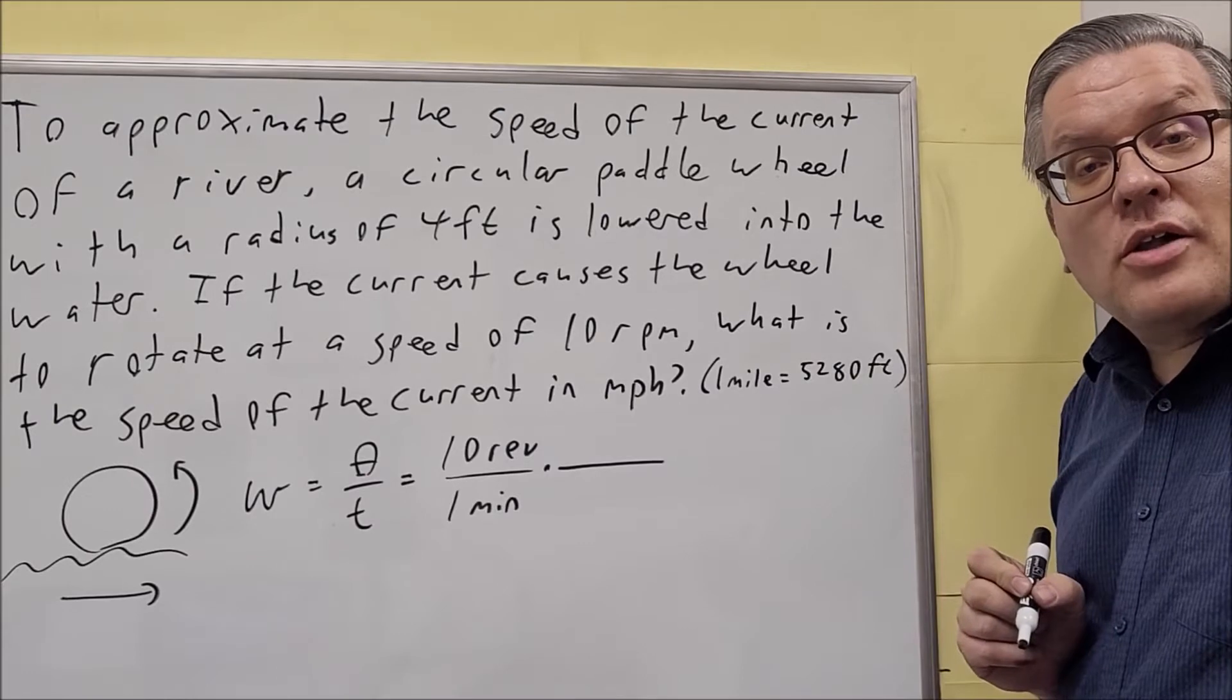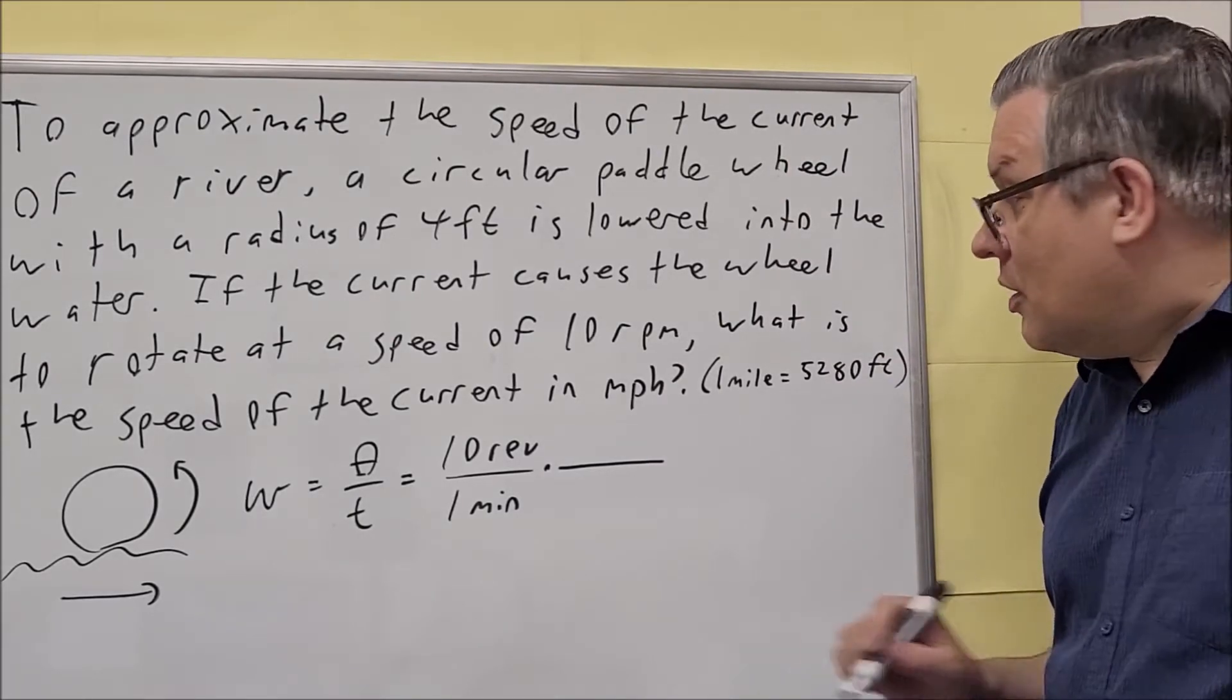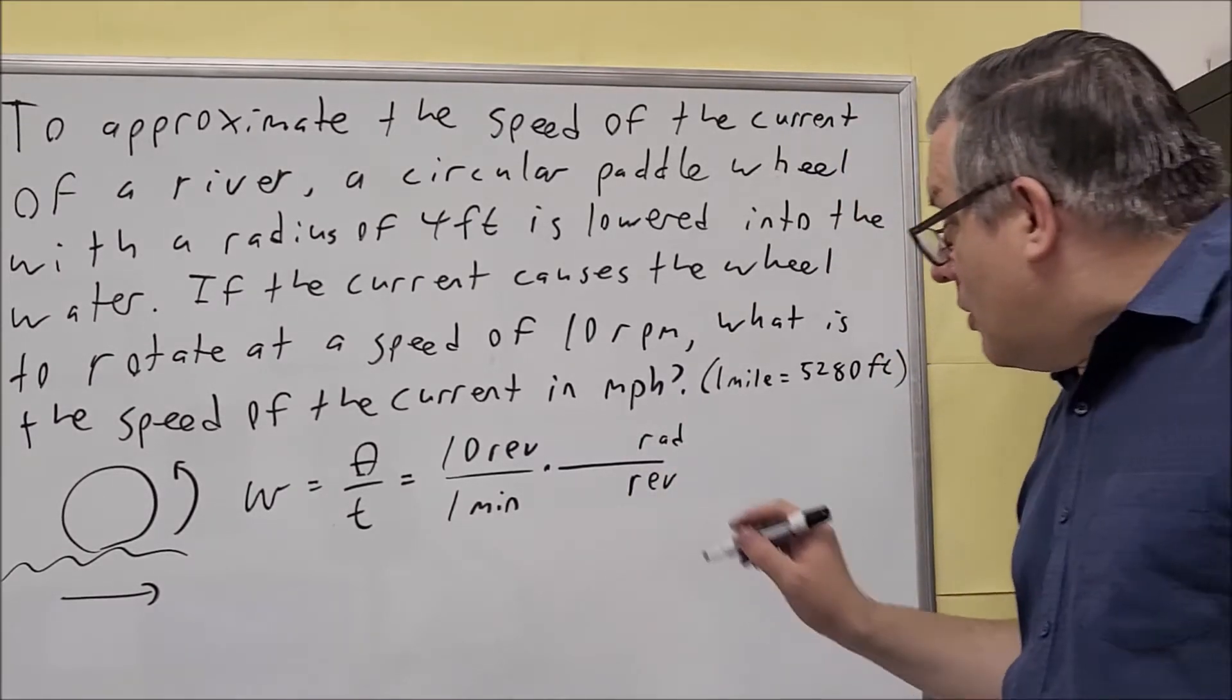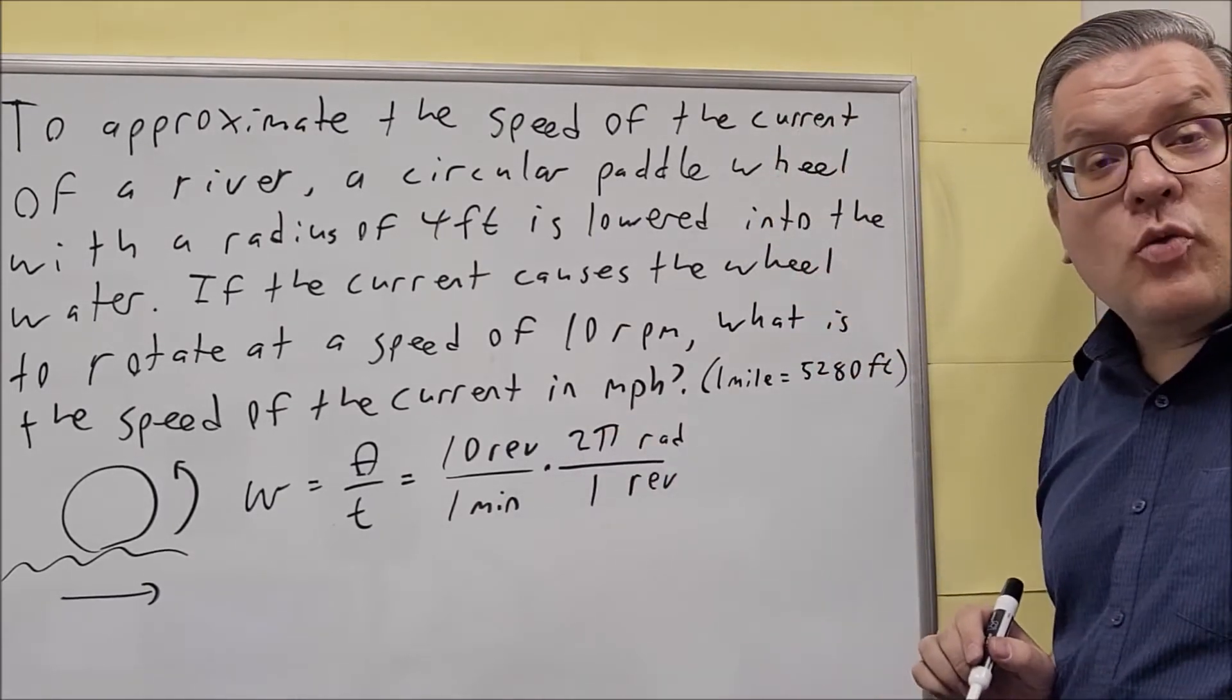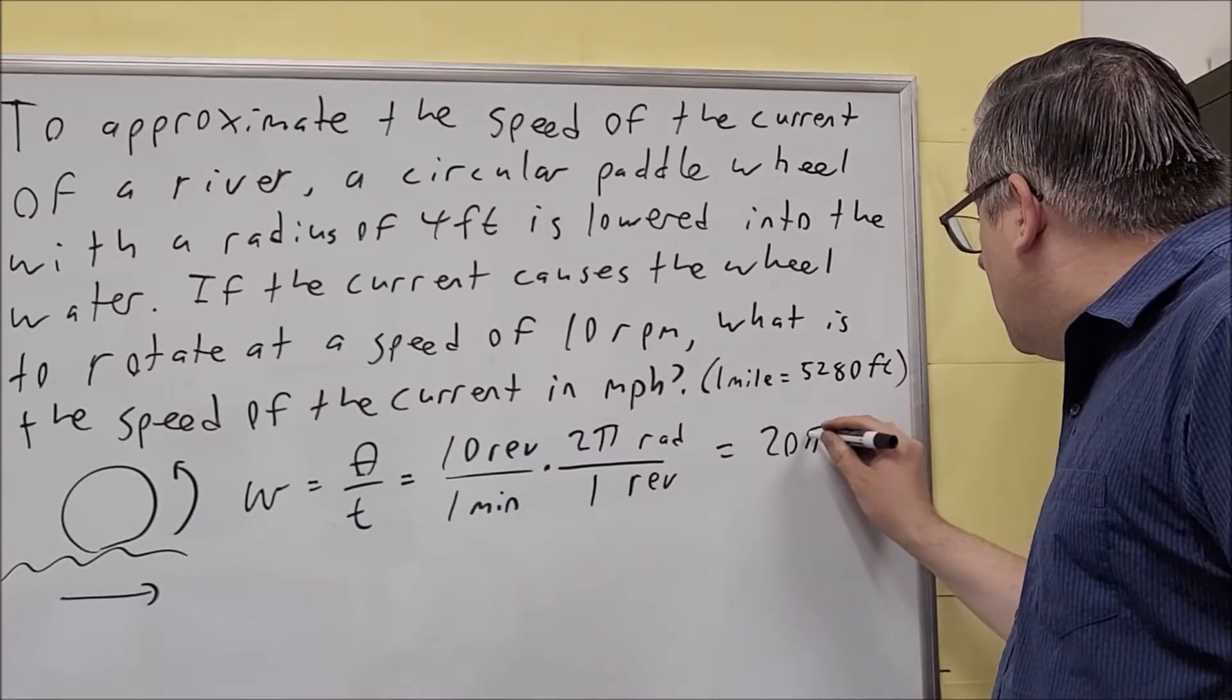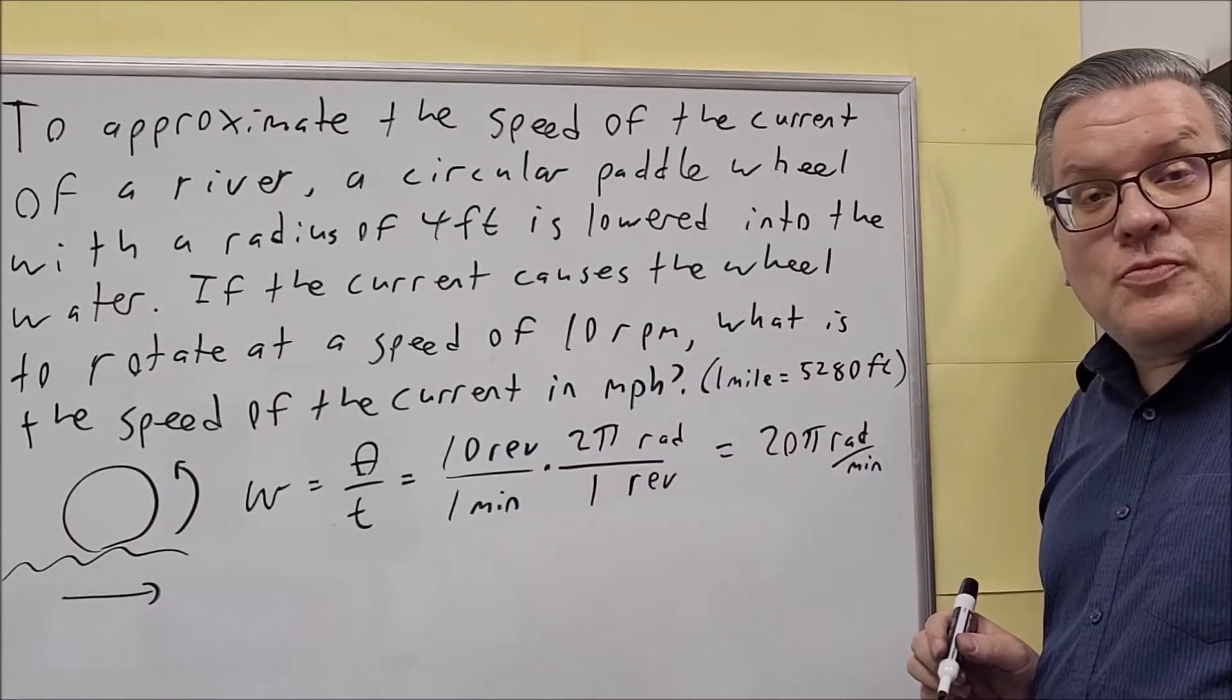The conversion that we talked about earlier in the session is that you have one revolution is the same thing as 2π radians. I want the revolutions to cancel so I got to put revs in the bottom and radians in the top. So one revolution is the same thing as 2π radians. When I multiply across the top and across the bottom, the revolutions are going to cancel out and we get 20π, and that's going to be radians per minute. So that's the first step, to find the angular speed.